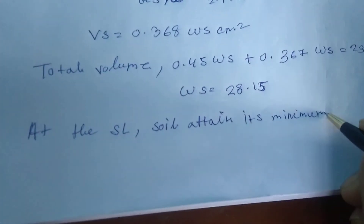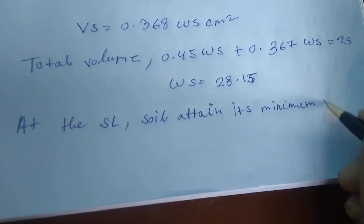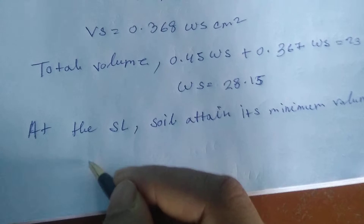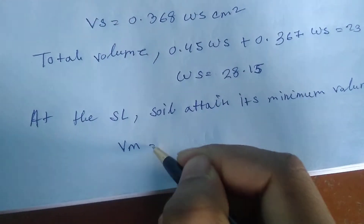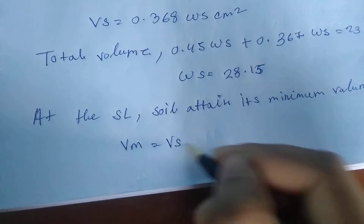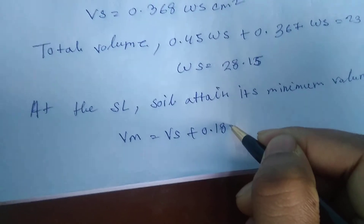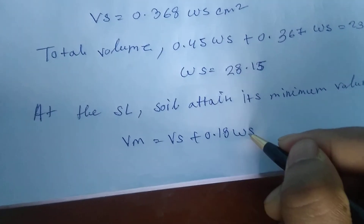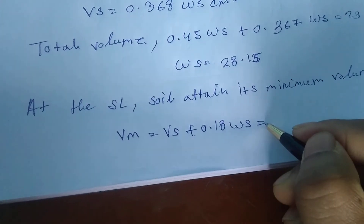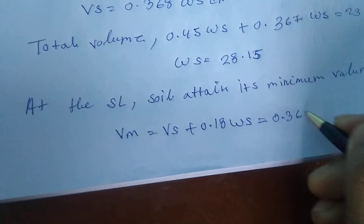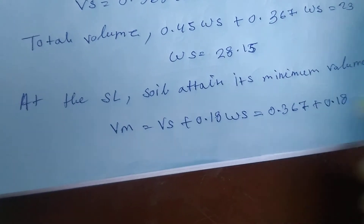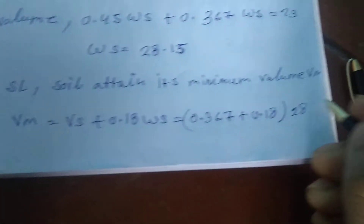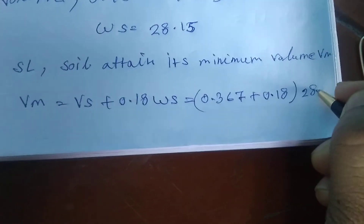Minimum volume VM equal to VS plus 0.18 WS equal to 0.367 plus 0.18, giving a result of approximately 15 centimeter cube.